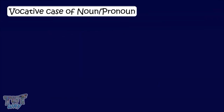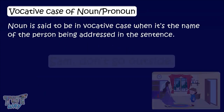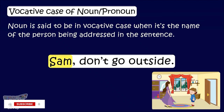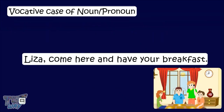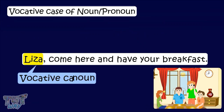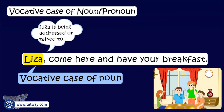Vocative case of noun and pronoun. A noun is said to be in the vocative case when it's the name of the person being addressed in the sentence. Let's learn with examples. Lisa, come here and have your breakfast. Here, 'Lisa' is a noun in the vocative case, as Lisa is being addressed or talked to.